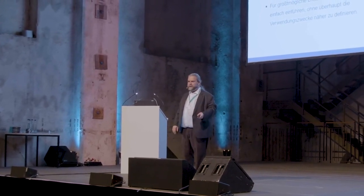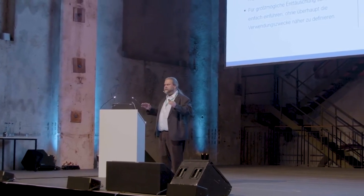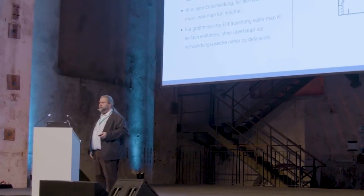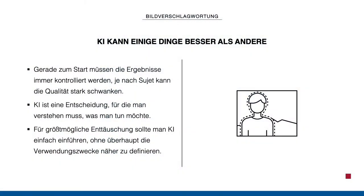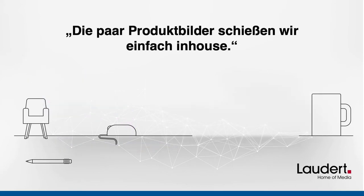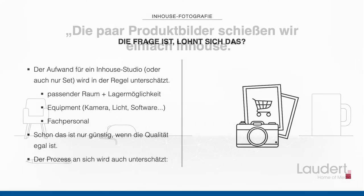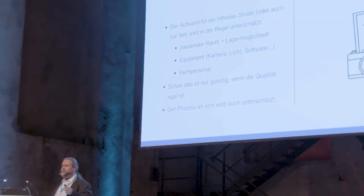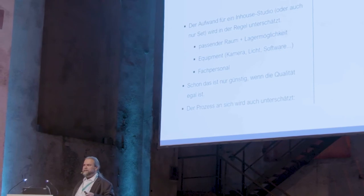If you want AI to have the least benefits, simply throw in AI without thinking about what you really want to do with it. Talking about image procurement or image sourcing — if I don't have any product images, how do I get them? I hear very often from industrial companies: 'we will produce them in-house.' This is not necessarily a failure — it's a clever idea. You just have to think about what this means to you.